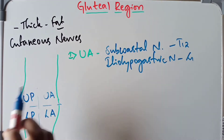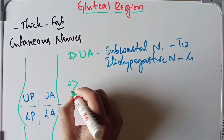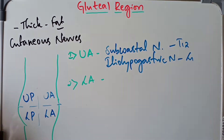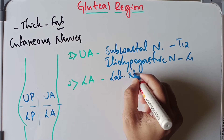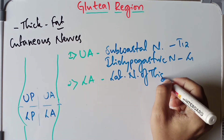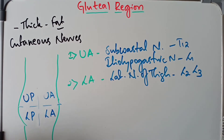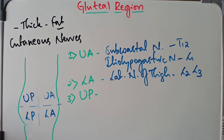The lower anterior quadrant is supplied by the posterior division of the lateral cutaneous nerve of the thigh. The lateral cutaneous nerve of the thigh has spinal segments of L2 and L3.